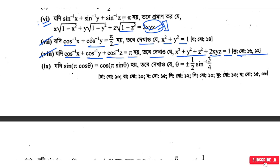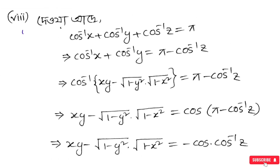Now the second method. cos⁻¹x + cos⁻¹y + cos⁻¹z. The other one: cos⁻¹x + cos⁻¹y + cos⁻¹z equals negative something. Can you tell me? The solution of the key: cos⁻¹x + cos⁻¹y + cos⁻¹z is equal to π.